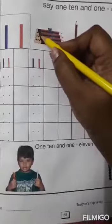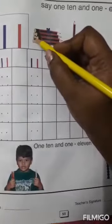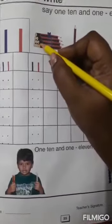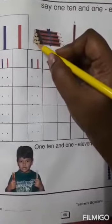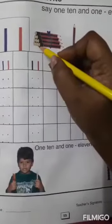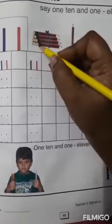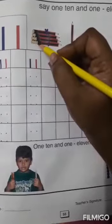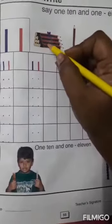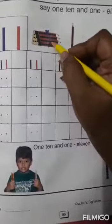1, 2, 3, 4, 5, 6, 7, 8, 9, 10. 10 pencils. Children, there are 10 pencils in one bundle. Strike out the pencils children.